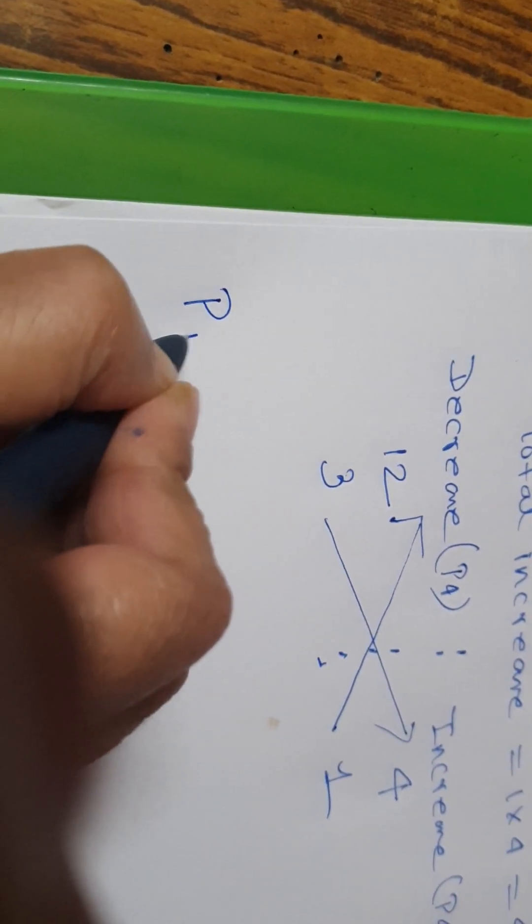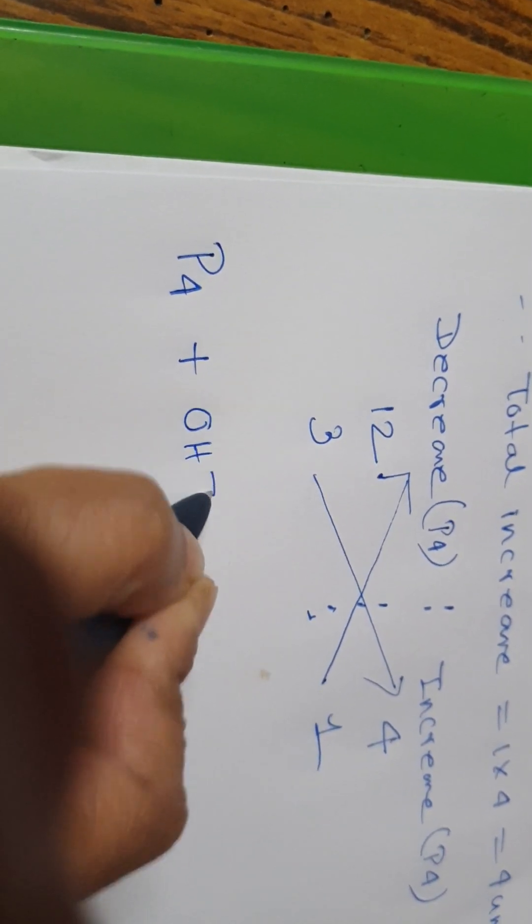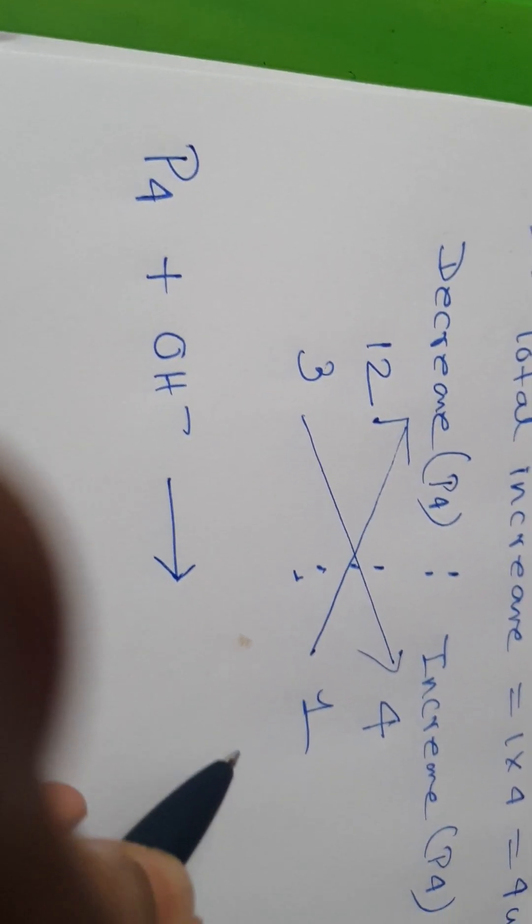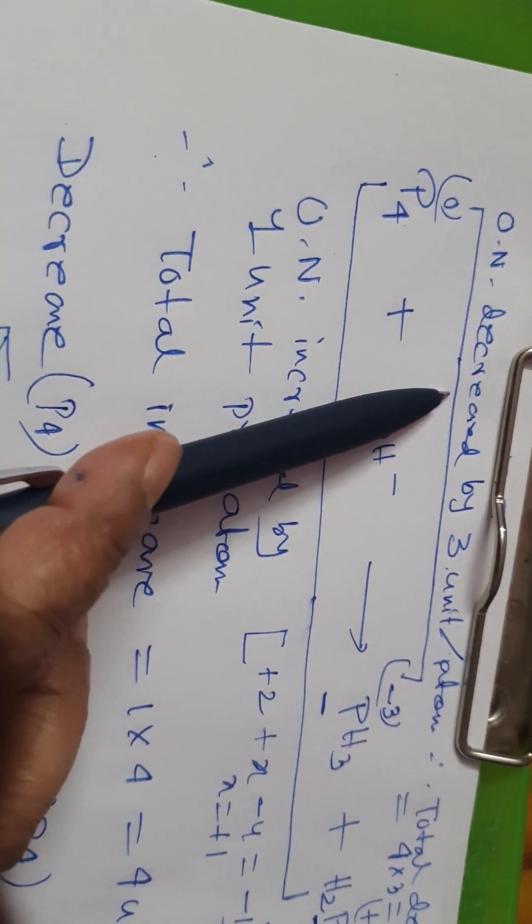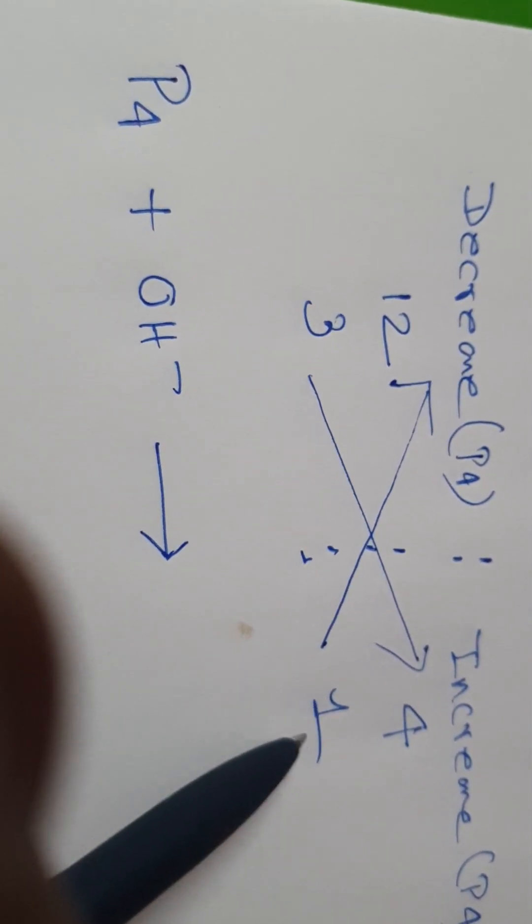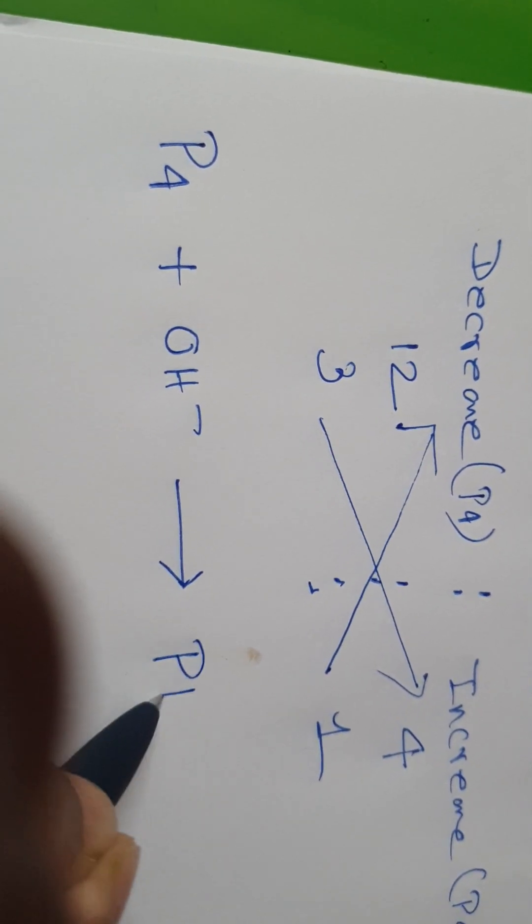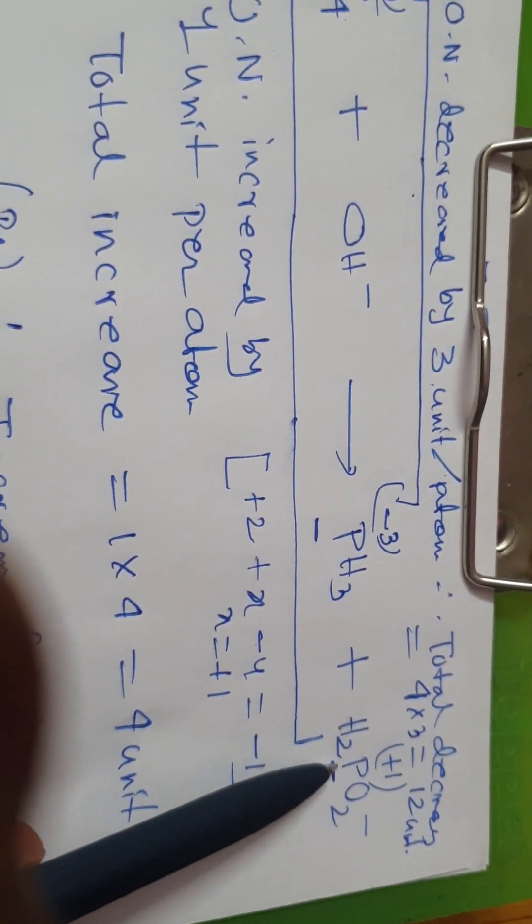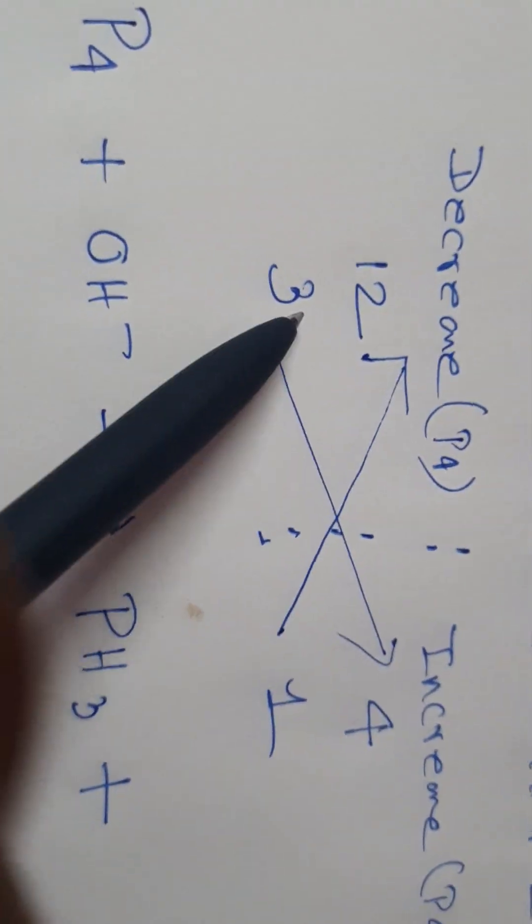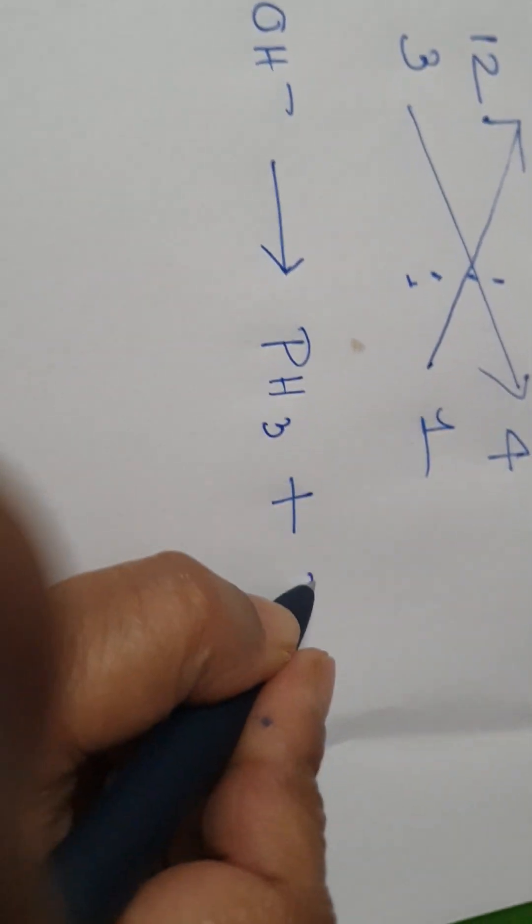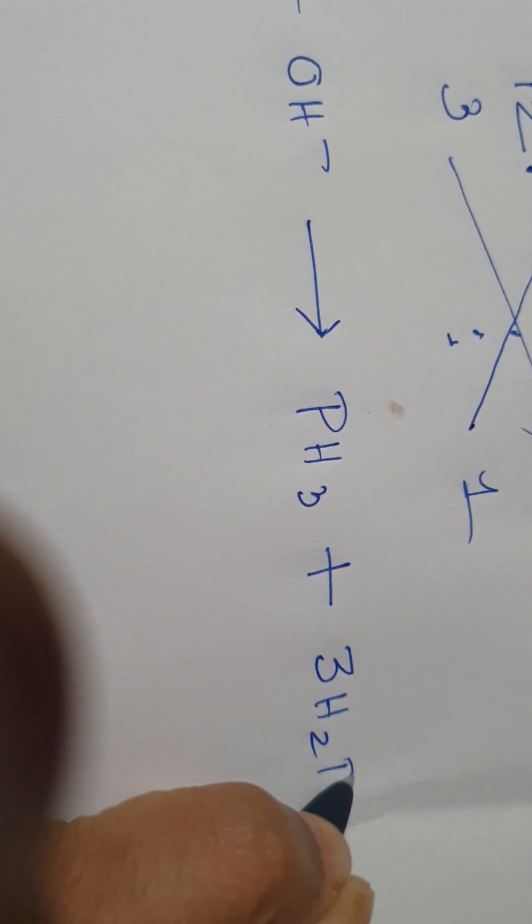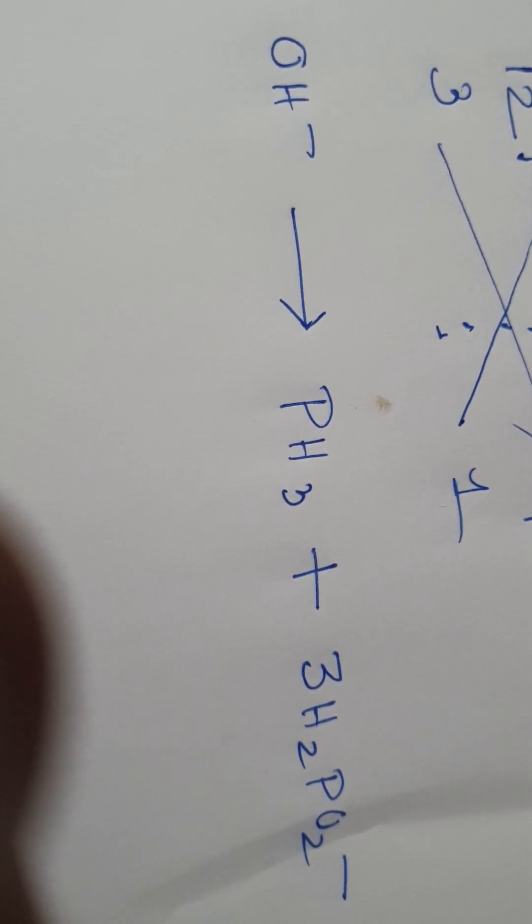OK, so look. Phosphorus is P4, P4 is here. Plus OH minus. Now, we see here PH3. PH3 comes in which category? Look, increase or decrease? Obviously, it's from decrease. So decrease, multiply by 1. That means PH3 multiply by 1. Plus H2PO2 minus. This comes in which category? Increase category. Increase multiply by 3. So here we will write 3 H2PO2 minus.